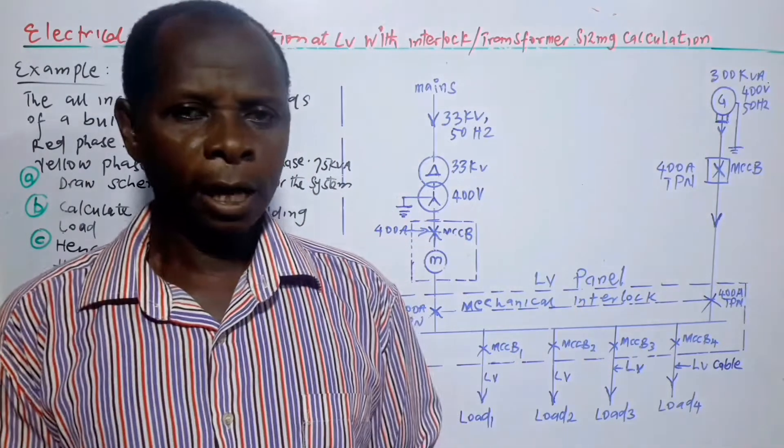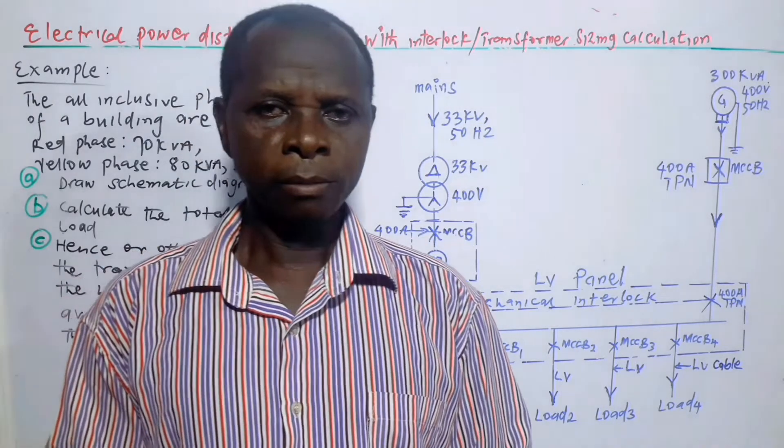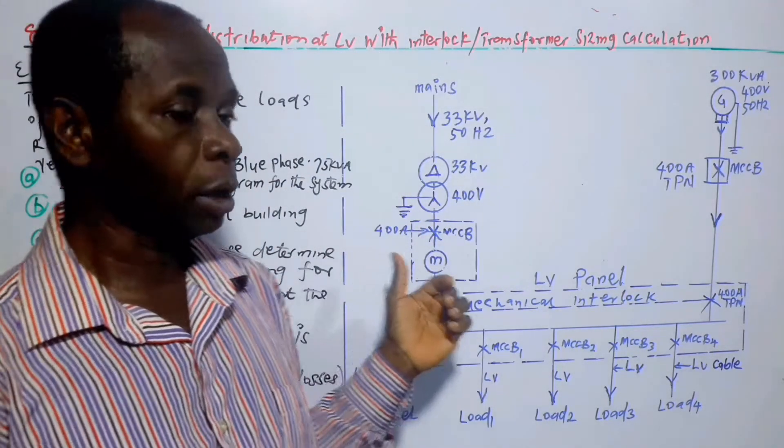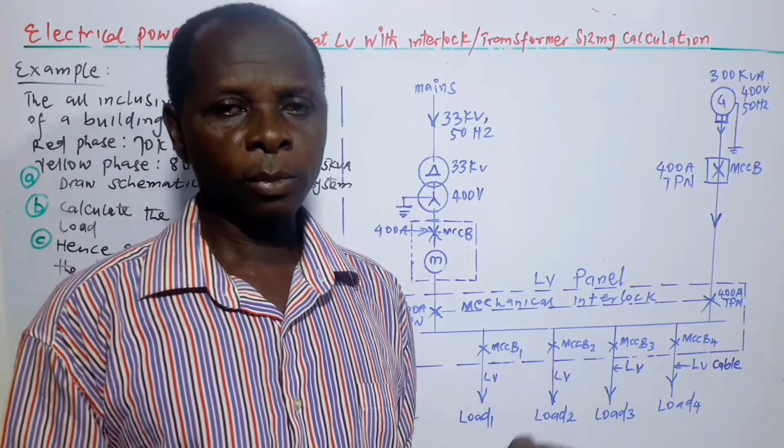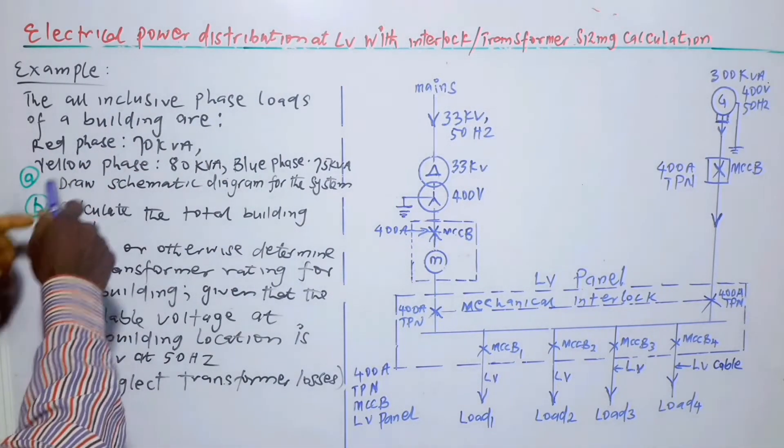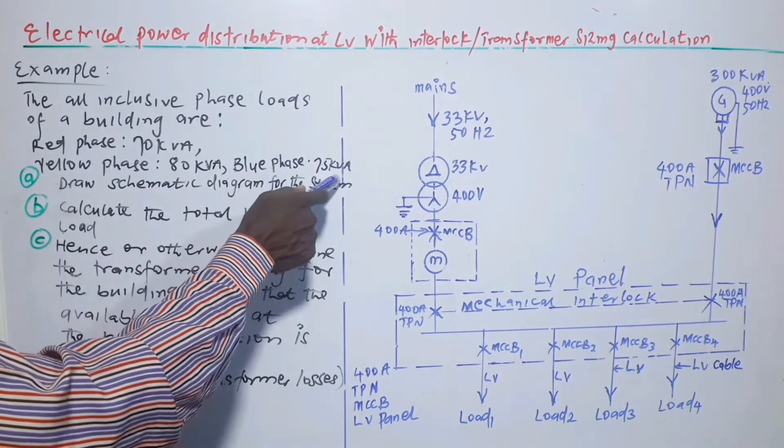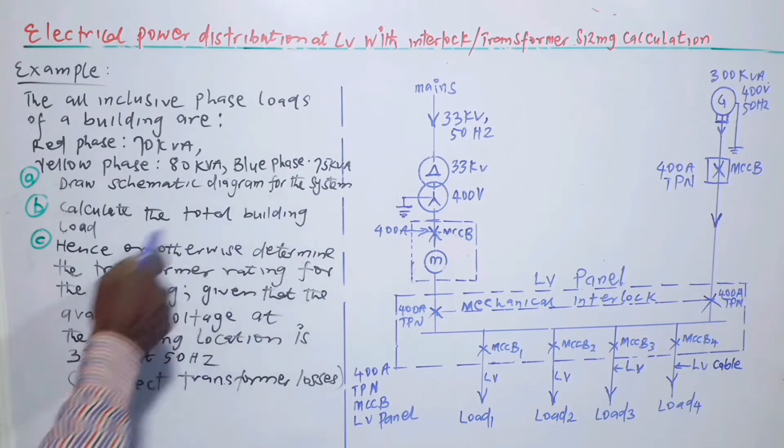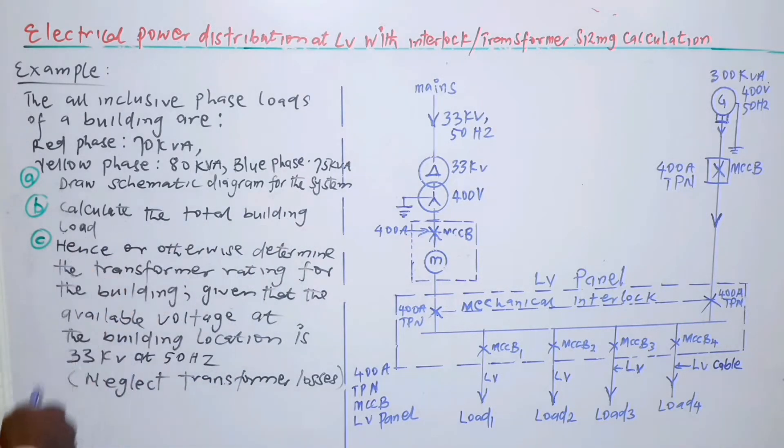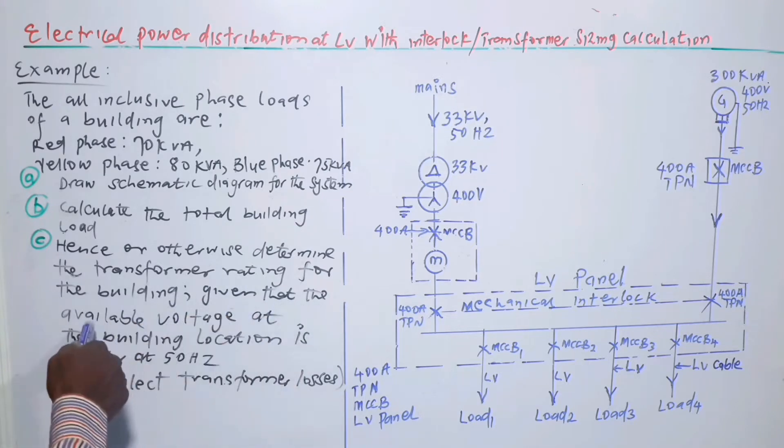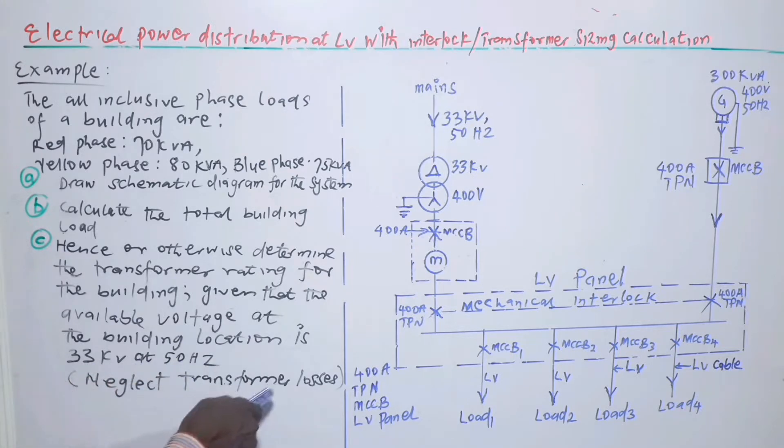For thorough understanding of the concept of power distribution system at low voltage and transformer sizing calculation, the concept is illustrated making use of an example. Example: The all-inclusive phase loads of a building are red phase 70 kVA, yellow phase 80 kVA, blue phase 75 kVA. Part A: Draw schematic diagram for the system. Part B: Calculate the total building load. Part C: Hence or otherwise determine the transformer rating for the building, given that the available voltage at the building location is 33 kV at 50 hertz. Neglect transformer losses.